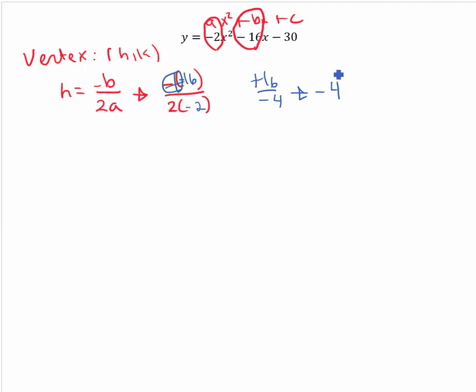So h equals that. Now we find our k. We take negative 4 and we plug it into negative 2 times negative 4 squared minus 16 times negative 4 minus 30.